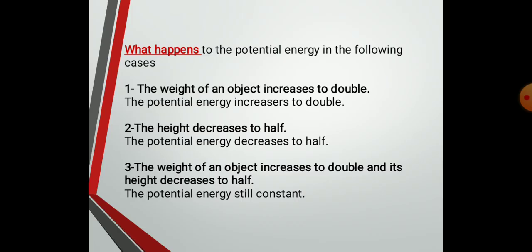What happens to the potential energy in the following cases? Number one: the weight of an object increases to double — the potential energy increases to double. Number two: the height decreases to half — the potential energy decreases to half. Number three: the weight of an object increases to double and its height decreases to half — the potential energy remains constant.